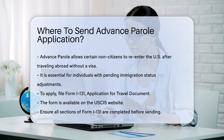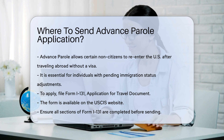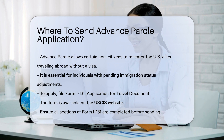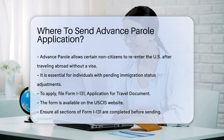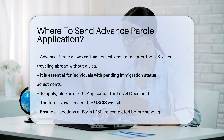To apply for advance parole, you must file Form I-131, Application for Travel Document. This form is available on the United States Citizenship and Immigration Services (USCIS) website.